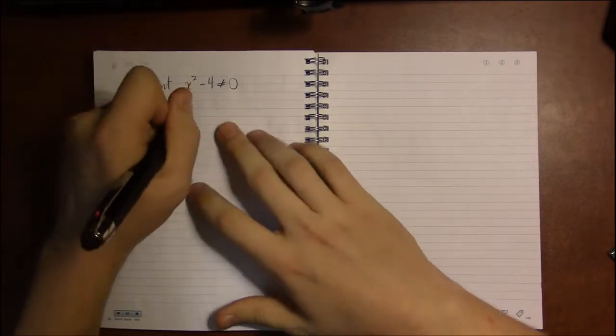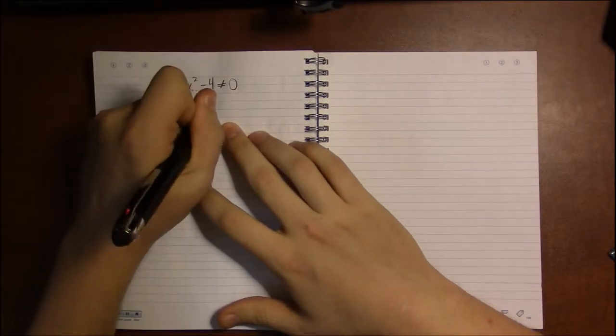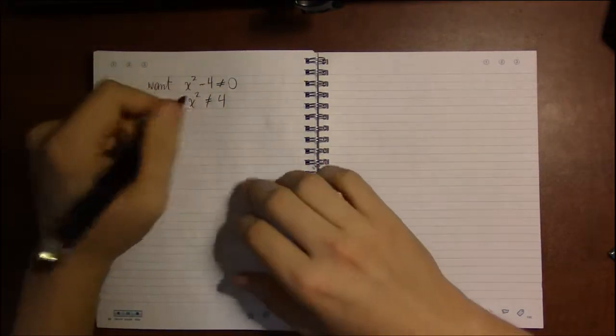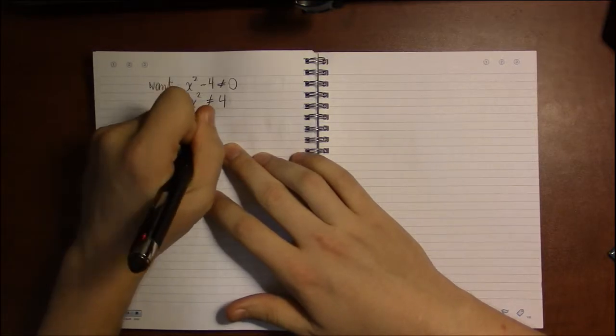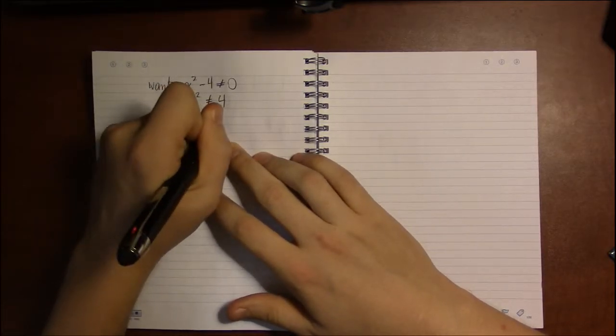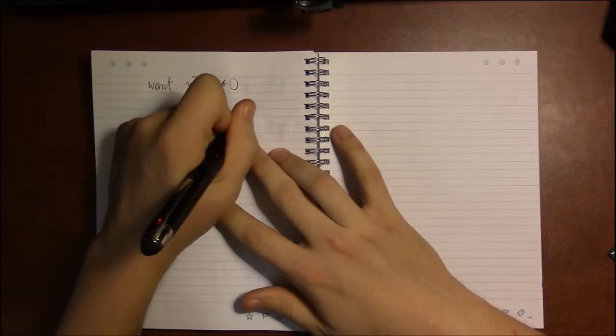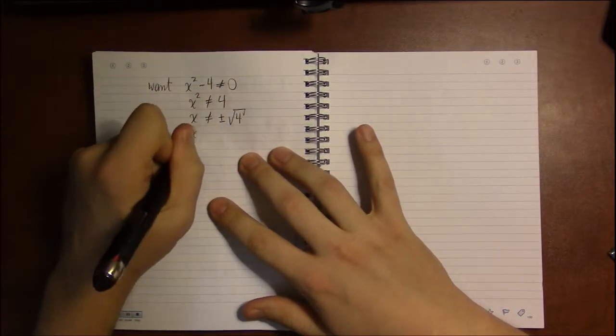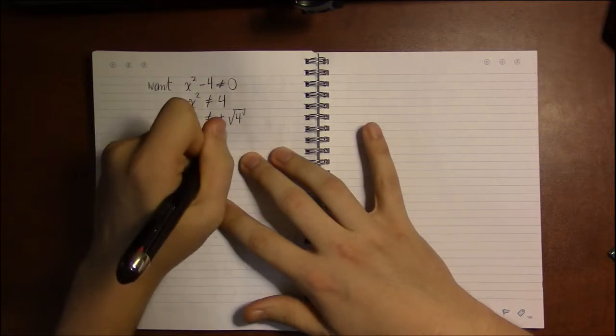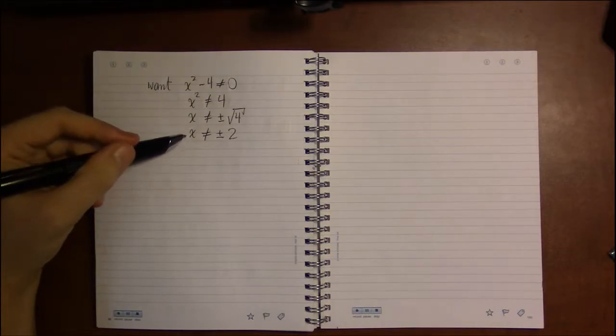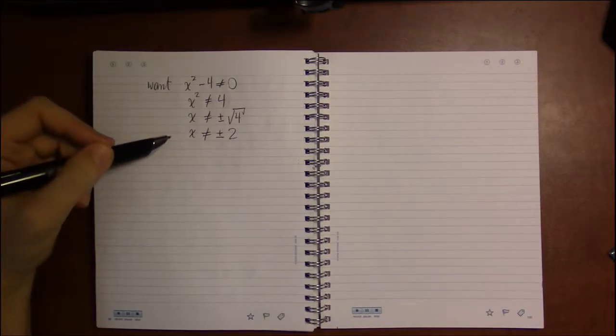So if I added 4 to both sides, if I took square roots of both sides - and of course taking square roots means adding plus or minus to one side of the equation - and square root of 4 is 2. So this tells me x can't be plus or minus 2.